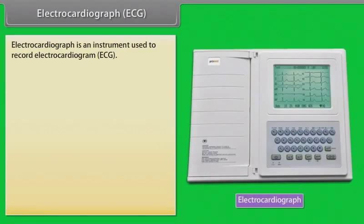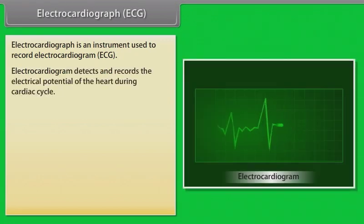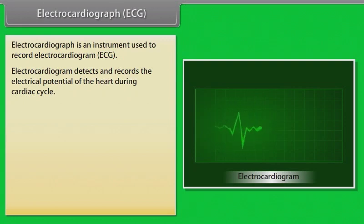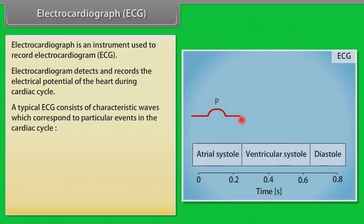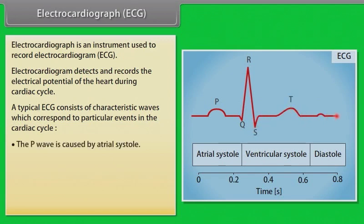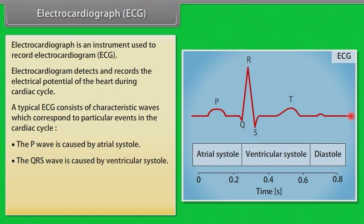Electrocardiograph (ECG): An electrocardiograph is an instrument used to record an electrocardiogram (ECG). The electrocardiogram detects and records the electrical potential of the heart during the cardiac cycle. A typical ECG consists of characteristic waves corresponding to particular events in the cardiac cycle: the P wave is caused by atrial systole, the QRS wave is caused by ventricular systole, and the T wave coincides with ventricular diastole. The heart rate can be calculated from the interval between one P wave and the next.